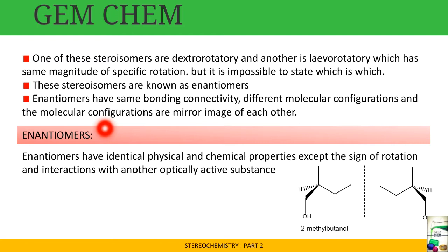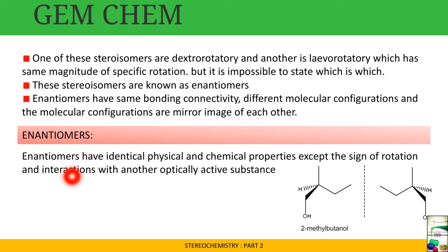These two isomers that are non-superimposable mirror images of each other are known as enantiomers. Enantiomers have the same bonding connectivity but different molecular configurations, and their molecular configurations are mirror images of each other. Enantiomers are defined as having identical physical and chemical characteristics except for the sign of optical rotation — plus for dextrorotatory and minus for levorotatory — and their interaction with another optically active substance.